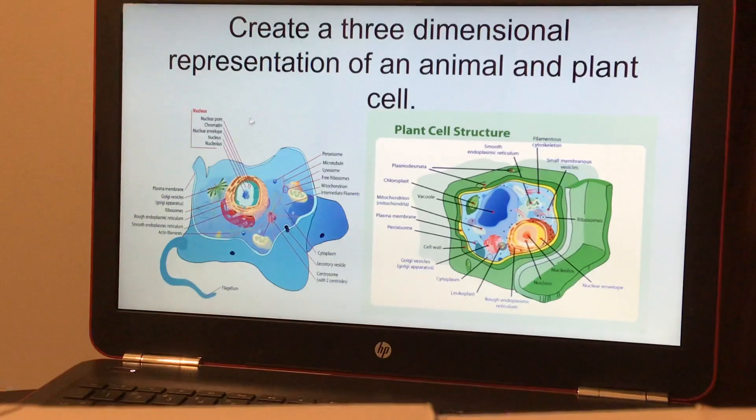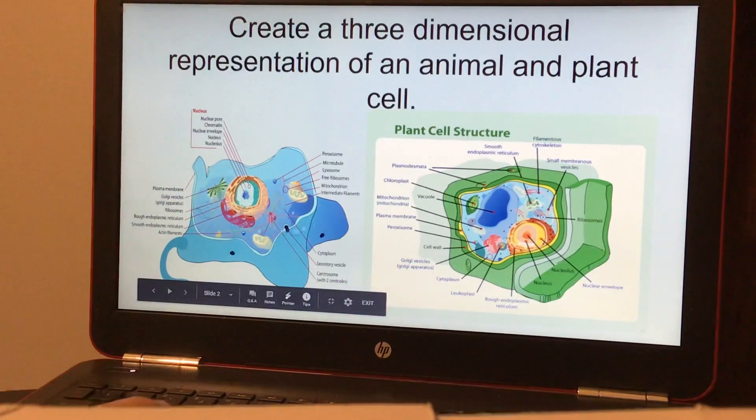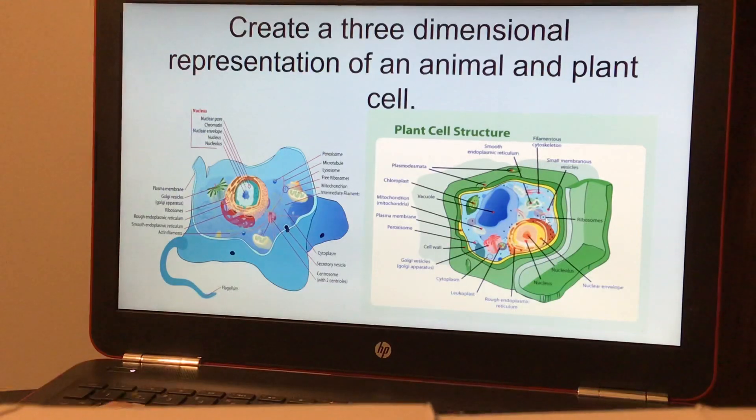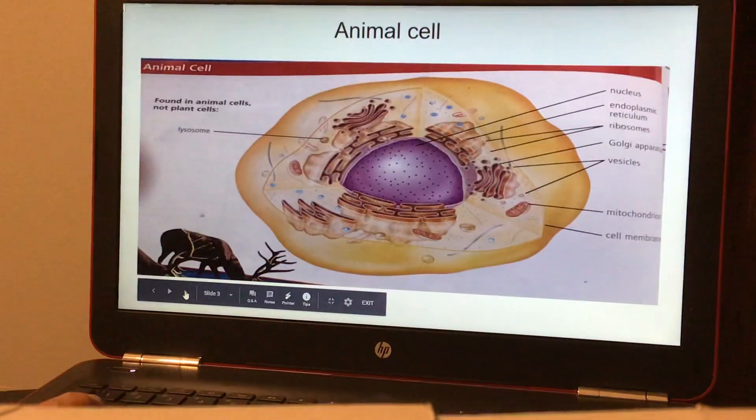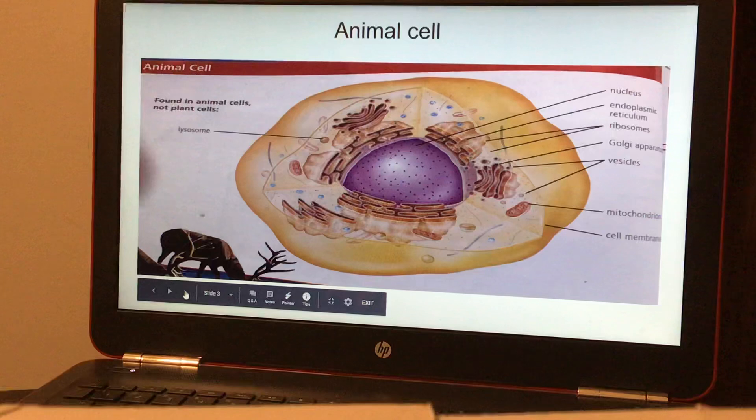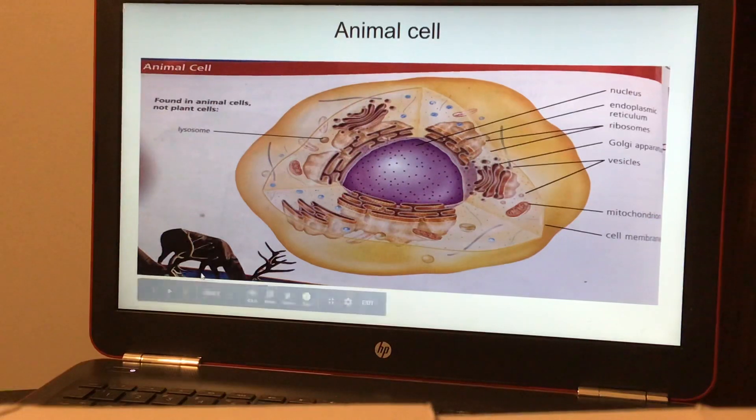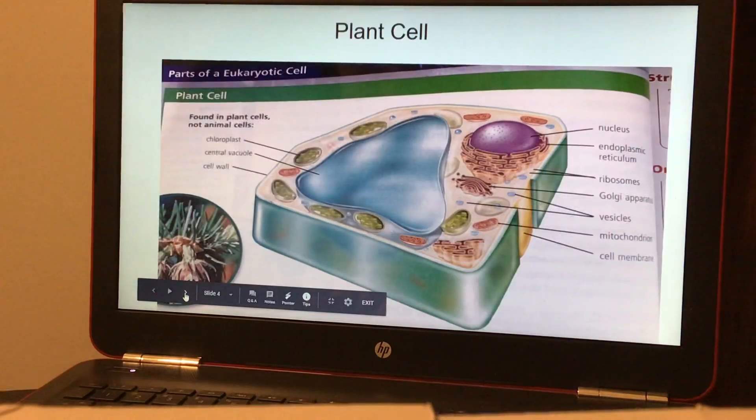Here's a picture of an animal cell and a plant cell, and it has all the different parts labeled already, just so that you can see and remember the parts of the animal and plant cell. Here's another animal cell, just to give you another look at it, and also the plant cell.